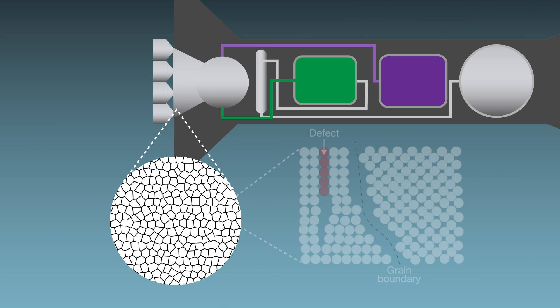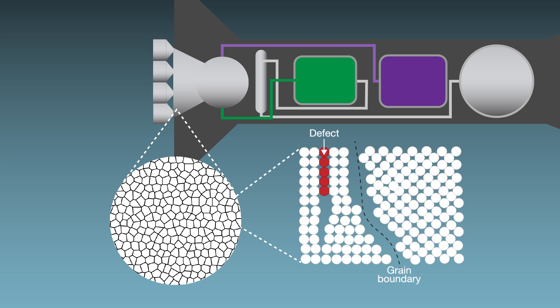Like tiny brick walls, the boundaries between these microscopic grains help stop the motion of defects that could lead to cracking.